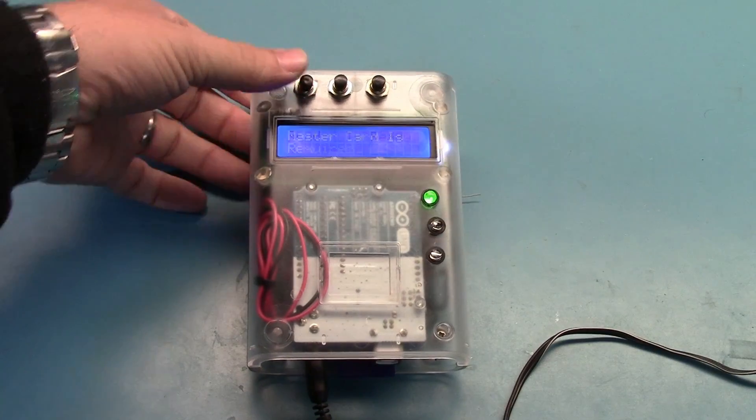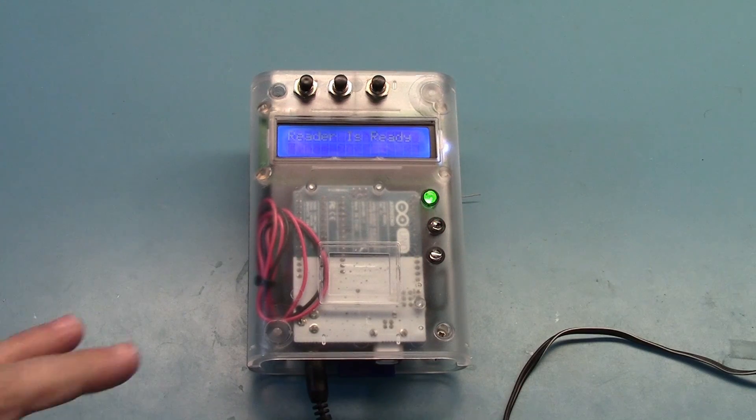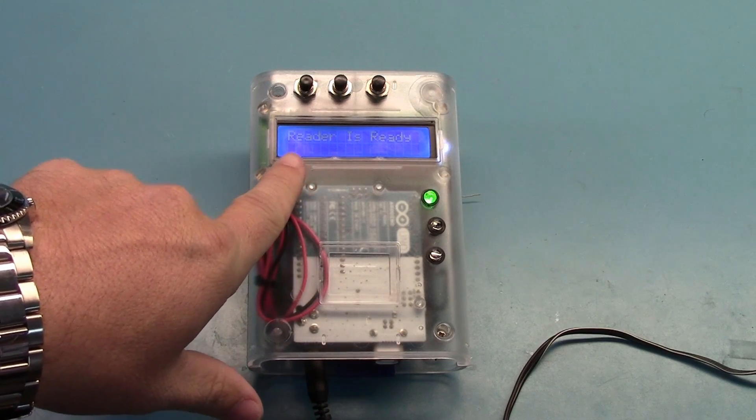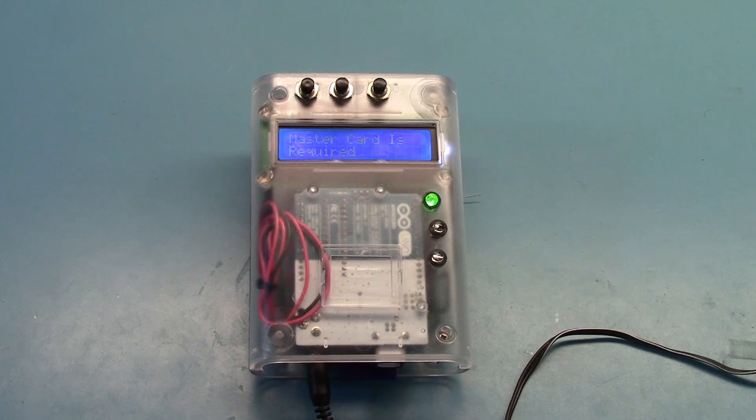So to enter programming mode, all we do is hit that. We have a little bit of security here. It's requesting the master card is required. That master card is whoever user one is. Another feature that we don't want is we don't want to stay in programming mode indefinitely. So if we put it in programming mode and we don't swipe, after so many cycles, it'll time out and go back to a ready to read state. Because that is the state that we always want to be in. We always want to be ready to read. If we don't swipe, we'll time out and go back to ready to read.